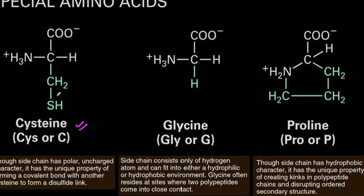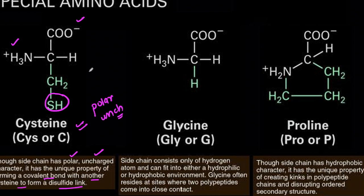Cysteine — what is special about cysteine? Cysteine has the presence of an SH group. Its side chain has a polar uncharged character — polar character and uncharged because the positive and negative charges balance out. It has the unique property of forming a covalent bond with another cysteine to form a disulfide link. So cysteine forms a disulfide bond with another cysteine — that is its special property and it forms a covalent bond.